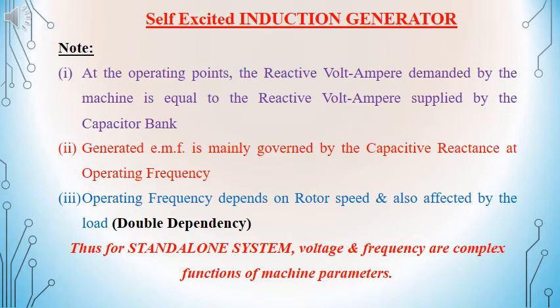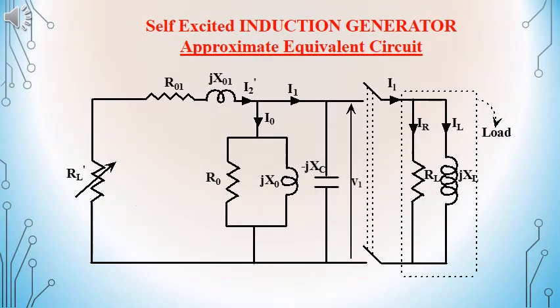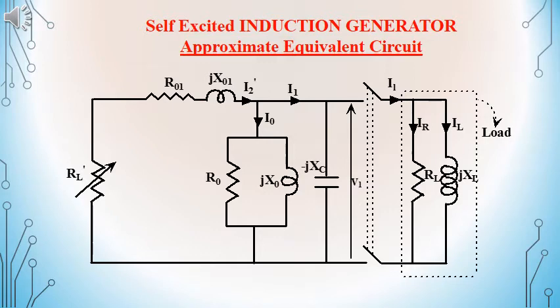The generated EMF will be governed by the capacitive reactance at the operating frequency. Here we have the approximate equivalent circuit given for a self-excited induction generator. On the left side, we have a variable resistance RL dash that is shown, which is equivalent to the prime mover providing the active power to the induction generator. The active power will be supplied to R01 and R0 as losses in the system, and the remaining will be supplied to the load given as RL. The entire reactive power, that is the lagging reactive power, is supplied by the capacitor connected, given by the capacitive reactance XC.